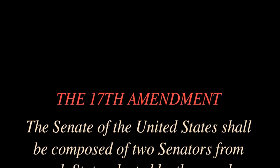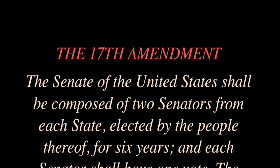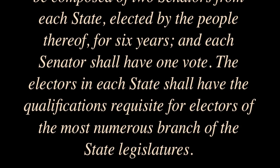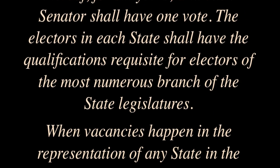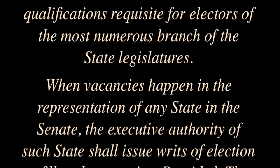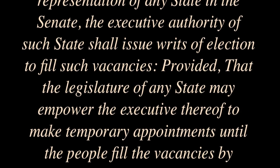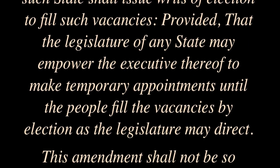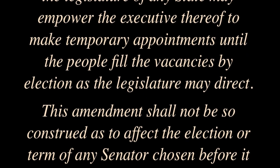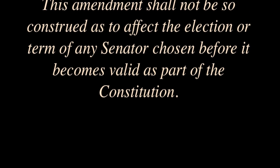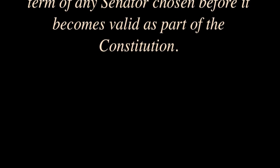The Senate of the United States shall be composed of two senators from each state, elected by the people thereof for six years, and each senator shall have one vote. The electors in each state shall have the qualifications requisite for electors of the most numerous branch of the state legislatures. When vacancies happen in the representation of any state in the Senate, the executive authority of such state shall issue writs of election to fill such vacancies, provided that the legislature of any state may empower the executive thereof to make temporary appointments until the people fill the vacancies by election as the legislature may direct. This amendment shall not be construed as to affect the election or a term of any senator chosen before it becomes valid as part of the Constitution.